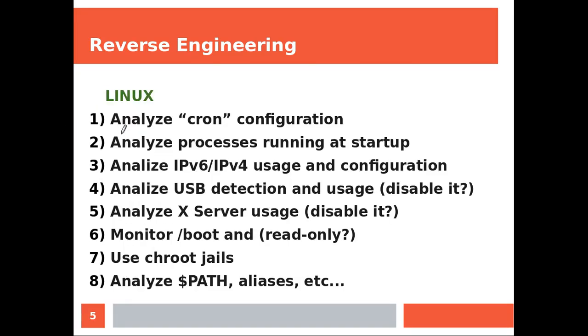So Linux machine, analyze cron configuration while on Windows you will be checking on scheduled tasks if any. Analyze processes running at startup. Analyze IPv6 and IPv4 usage and configuration. You might want to disable IPv6 if it's not used. Analyze USB detection usage. So sometimes you'll find that USB automatic detection can be disabled. It might be safer.